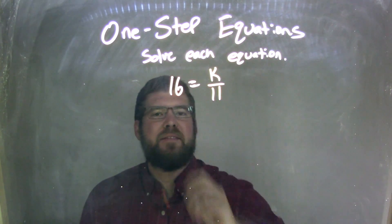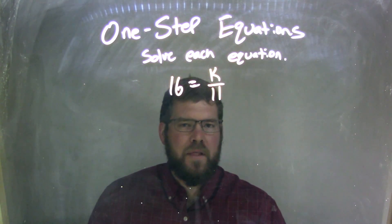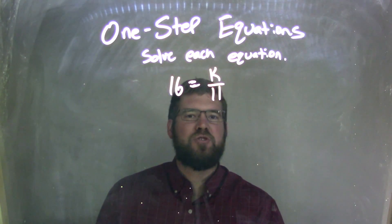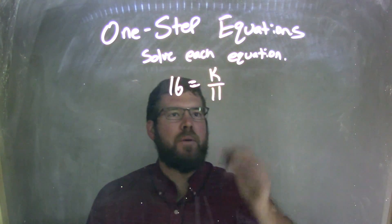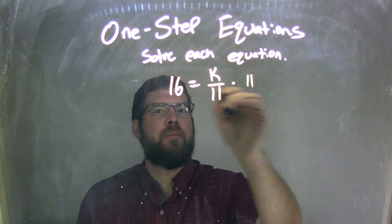Well, I have k over 11 written and 16 to the left. k over 11 is k divided by 11, so the opposite of division is multiplication, so I'm going to multiply both sides by 11.